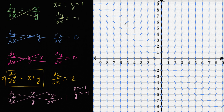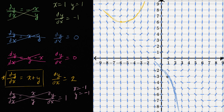Well, it depends where the solutions start, or what points they contain. If you have a solution that contains that point, it looks like it might do something like this. If you had a solution that contained this other point, it might do something like that. And of course it keeps going — it looks like it would asymptote towards the line y equals negative x. This downward-sloping line is essentially y equals negative x.